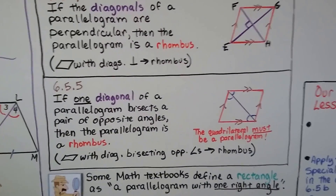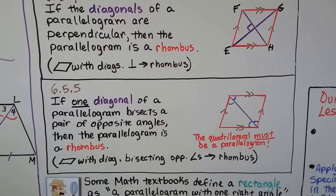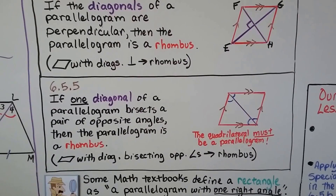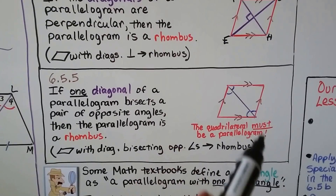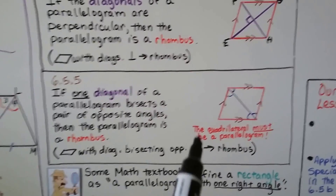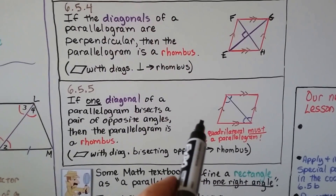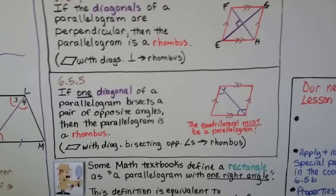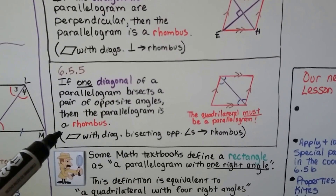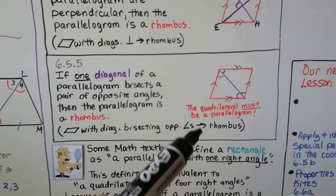Theorem 6.5.5 says if one diagonal of a parallelogram bisects a pair of opposite angles, then the parallelogram is a rhombus. Just like Theorem 6.5.1, the quadrilateral must be a parallelogram. In geometric notation: parallelogram with diagonals bisecting opposite angles, therefore rhombus.